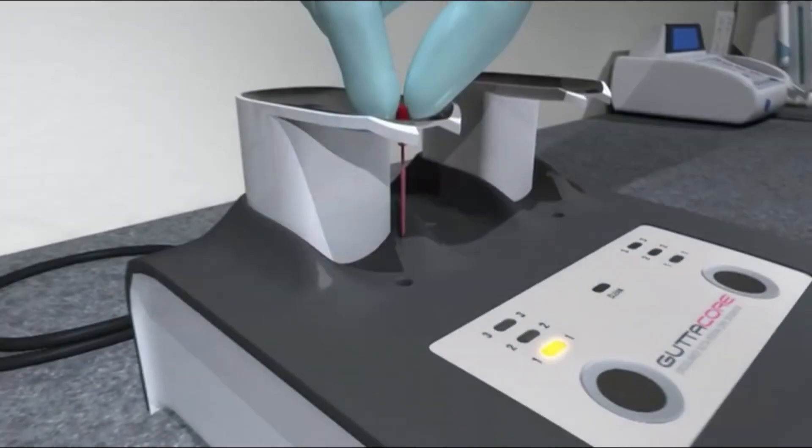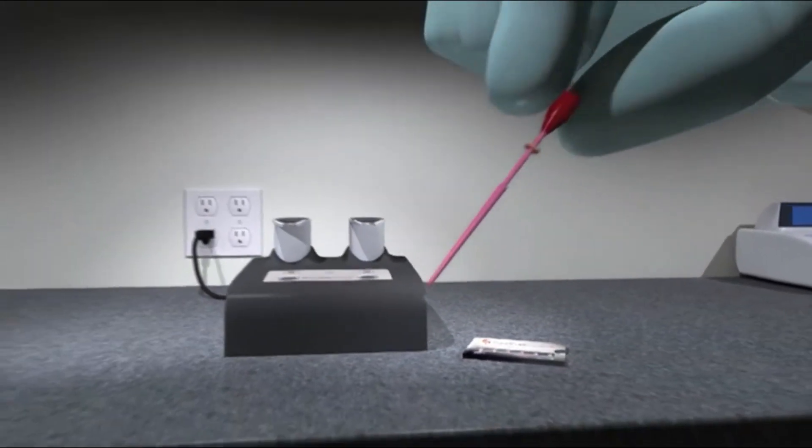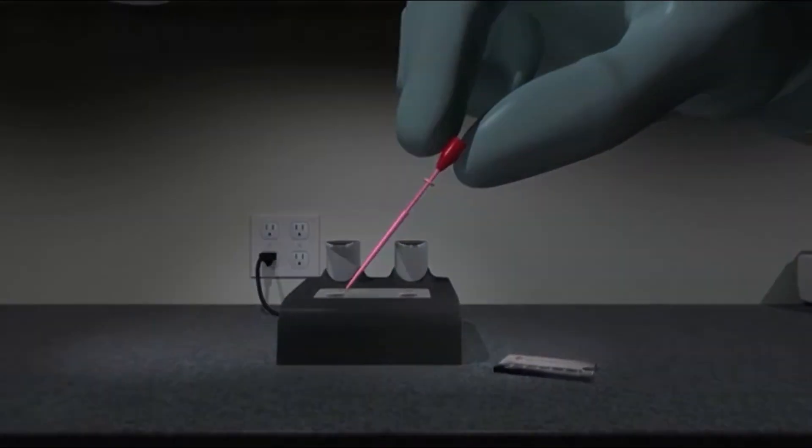GuttaCore Obturators are coated with the same flowable alpha-phase Gutta-percha that's provided predictable fills for more than 20 years. But GuttaCore is changing obturation from the inside out.